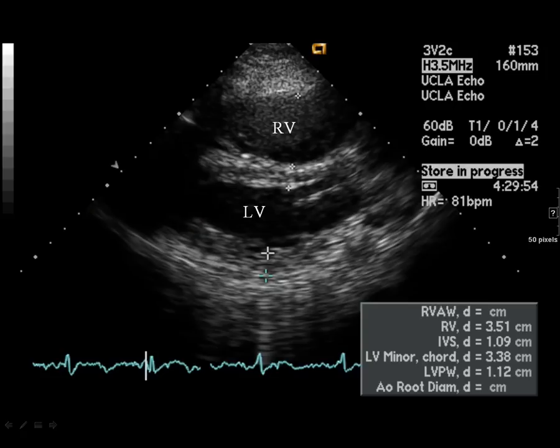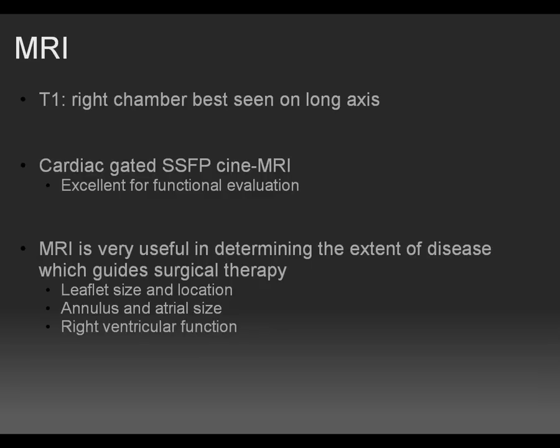We can evaluate for right atrial and ventricular dilatation, as shown by the increased right ventricular diameter measured on this still image. Cardiac MRI has evolved into a powerful tool for evaluation of both structure and function in cardiac disease, allowing imaging in any plane, including the standard long and short axis views familiar to echocardiographers.